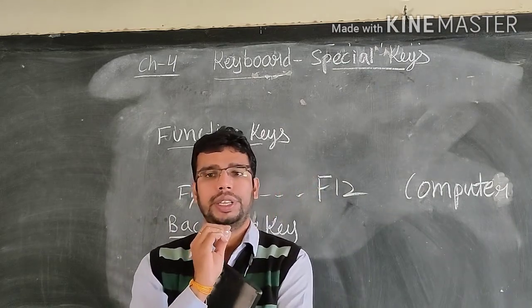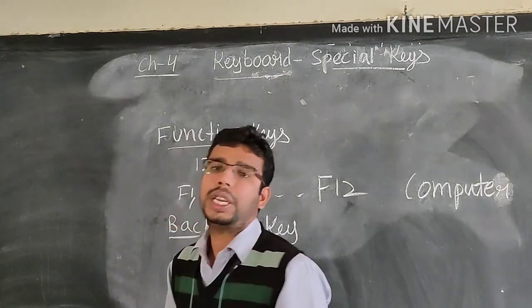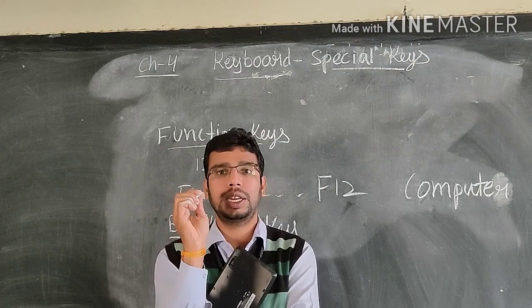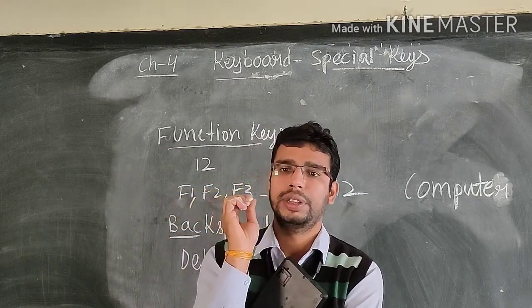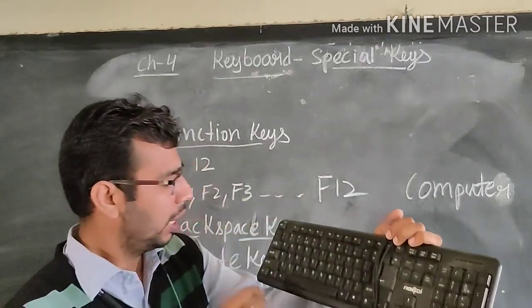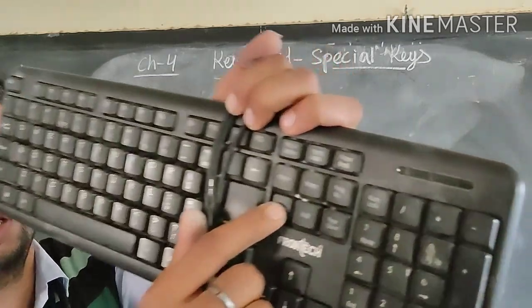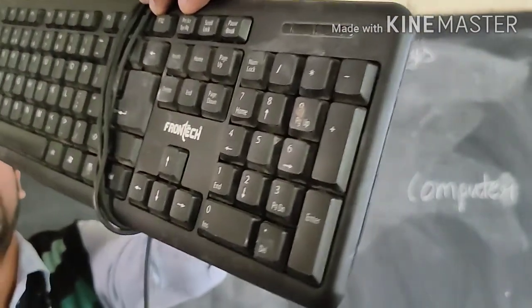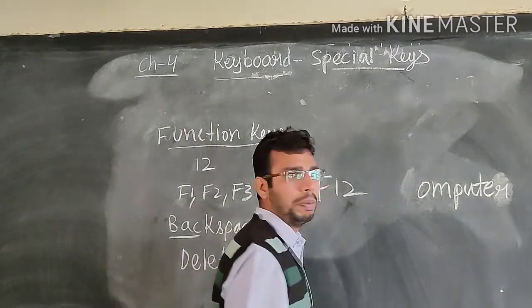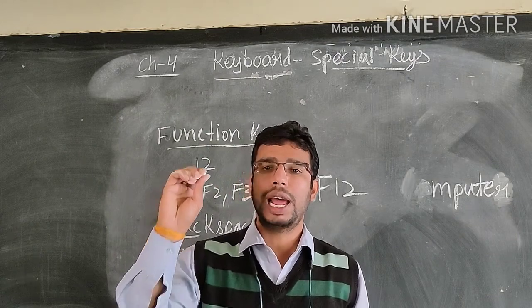Now, delete key. Delete key is used to erase the letter on the right-hand side. For example, with the word 'computer,' when we press the delete key — here is the delete key; there are two delete keys, one here and another here — the letter from the right-hand side will be deleted. If we press again, the next letter from the right-hand side will also be deleted. So, delete key is used to erase the letter from the right-hand side.